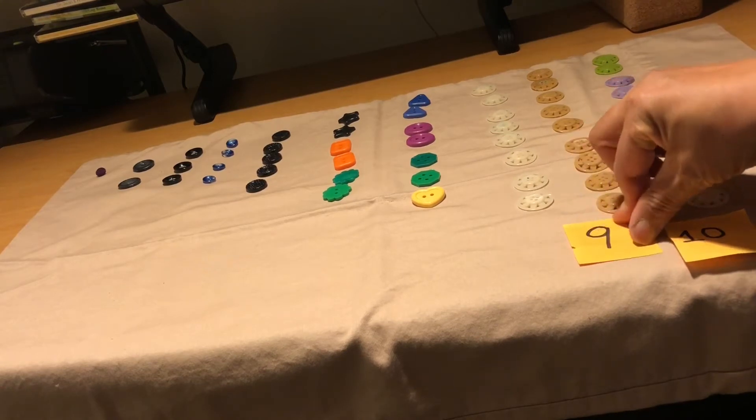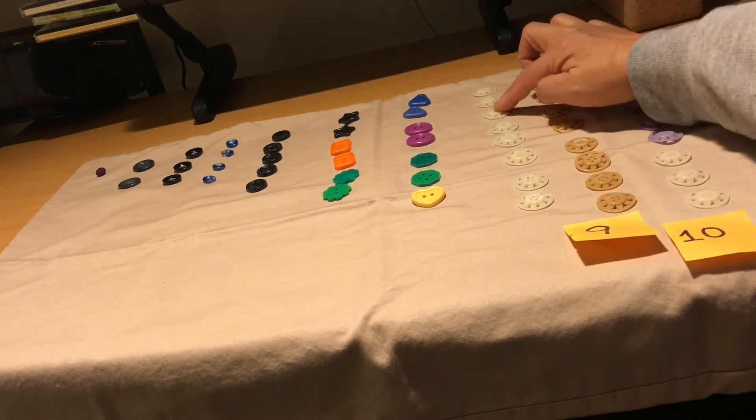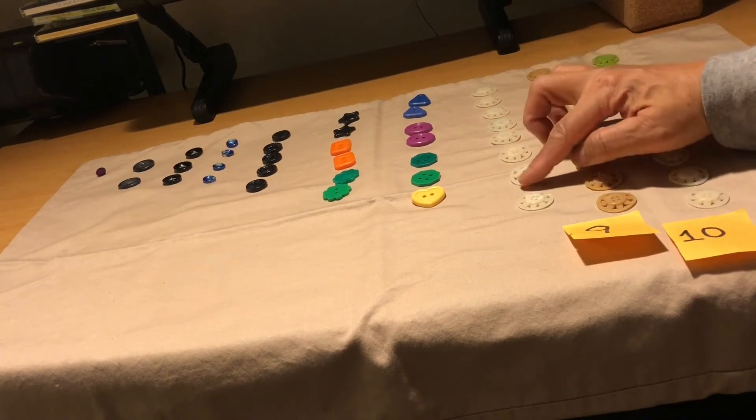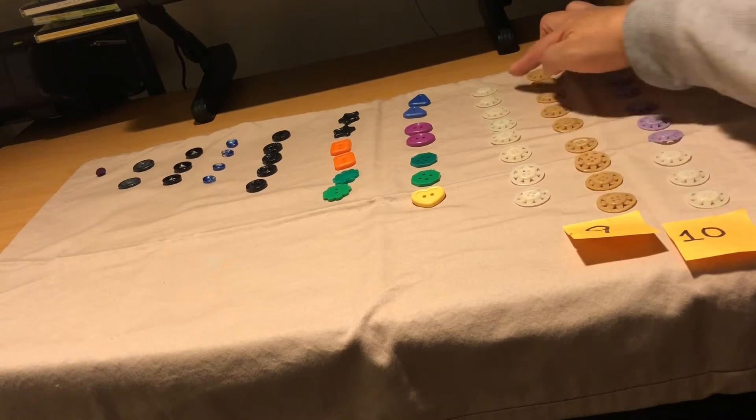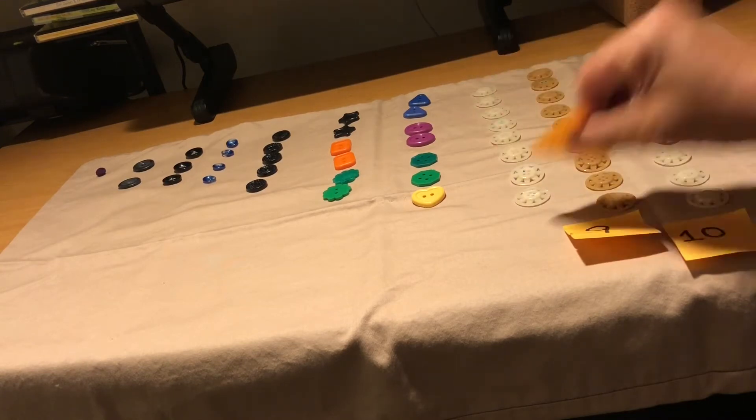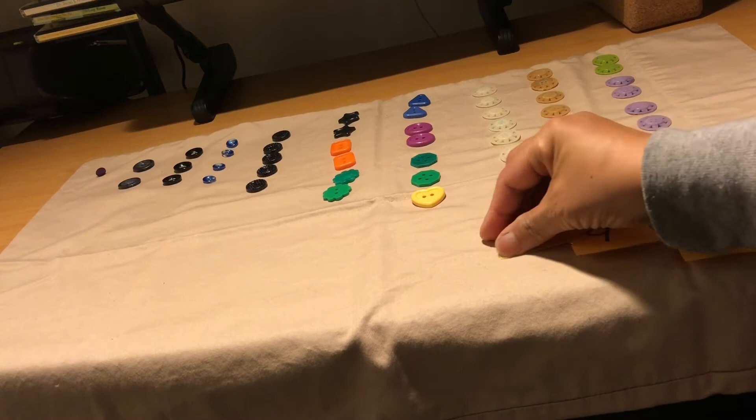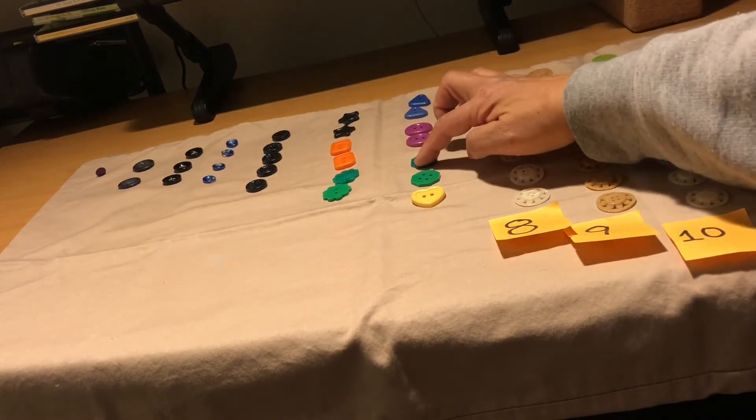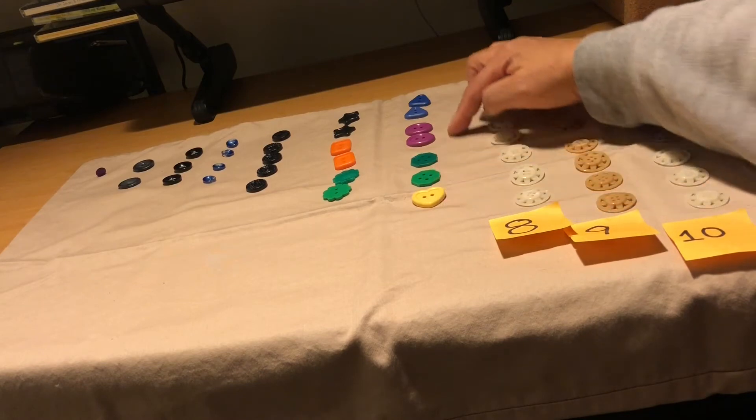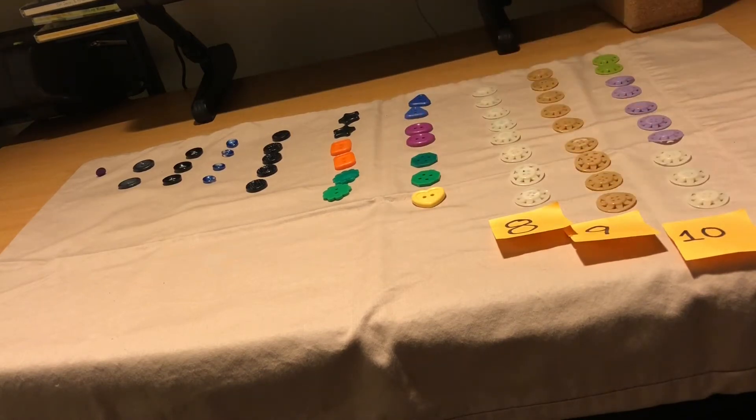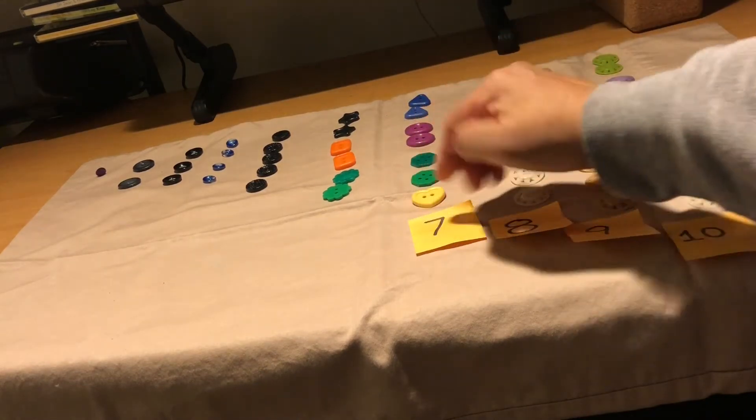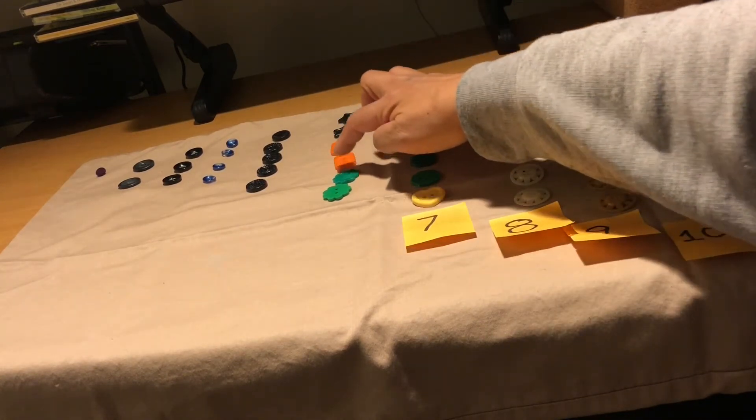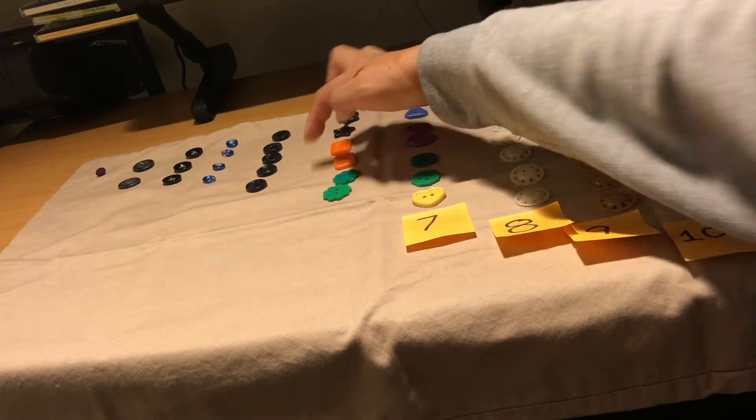Here's my number eight, one, two, three, four, five, six, seven, eight, eight buttons in that group. Here's my number seven, one, two, three, four, five, six, seven, seven buttons all together. Here's my number six, one, two, three, four, five, six, six buttons.